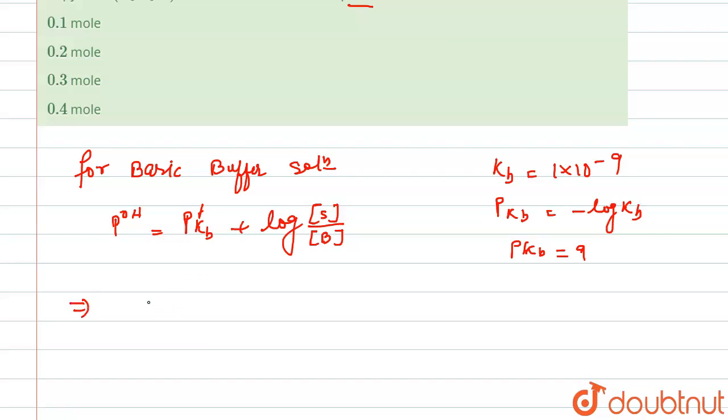We have pH given in the question as 5, and this equals 14. So from here our value of pOH equals to 9. So we have value of pKb and pOH.